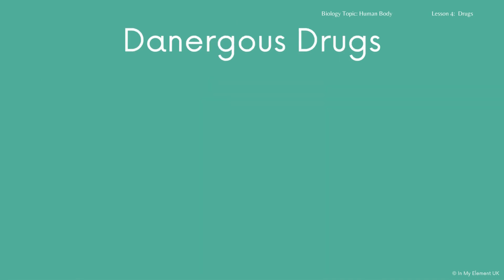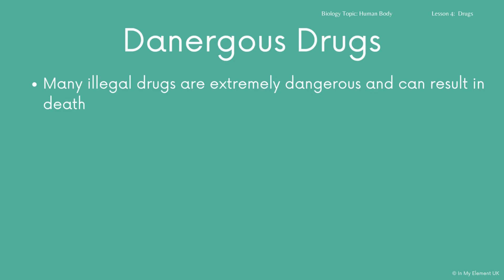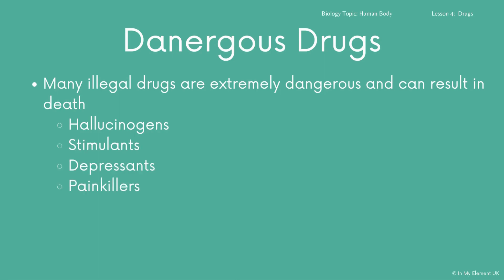Many of the illegal drugs are dangerous and can lead to death. We're talking about hallucinogens, stimulants, and painkillers — all of those are dangerous. A hallucinogen is something like LSD, ecstasy, or a solvent that will affect the messages sent to the brain, and that's what causes you to think you're seeing things that aren't really there.